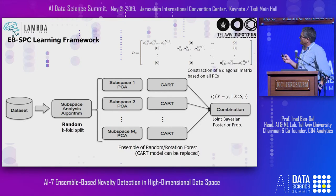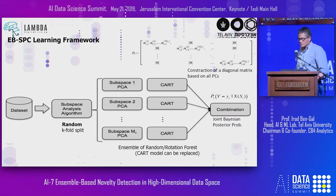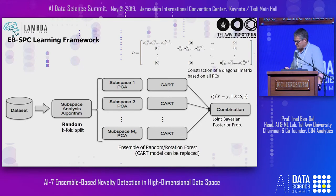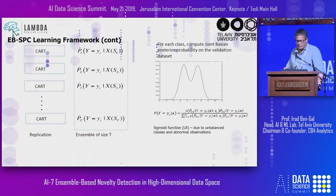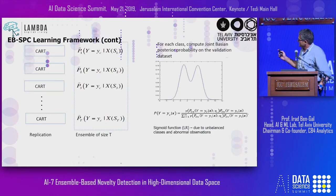The innovation here is related to the way that you reconstruct this diagonal matrix based on all the PCs, and how you actually join all those CARTs using an SPC rule-based approach to construct a combination of this joint probability distribution. We'll show you how it works with respect to regular ensemble monitoring.